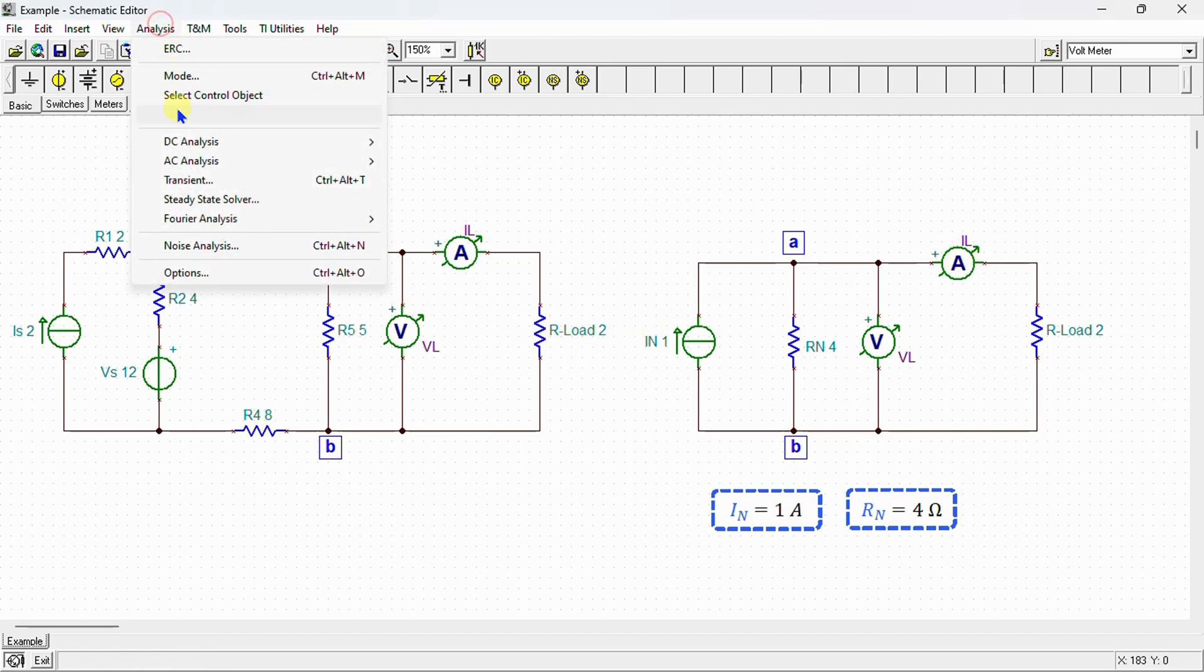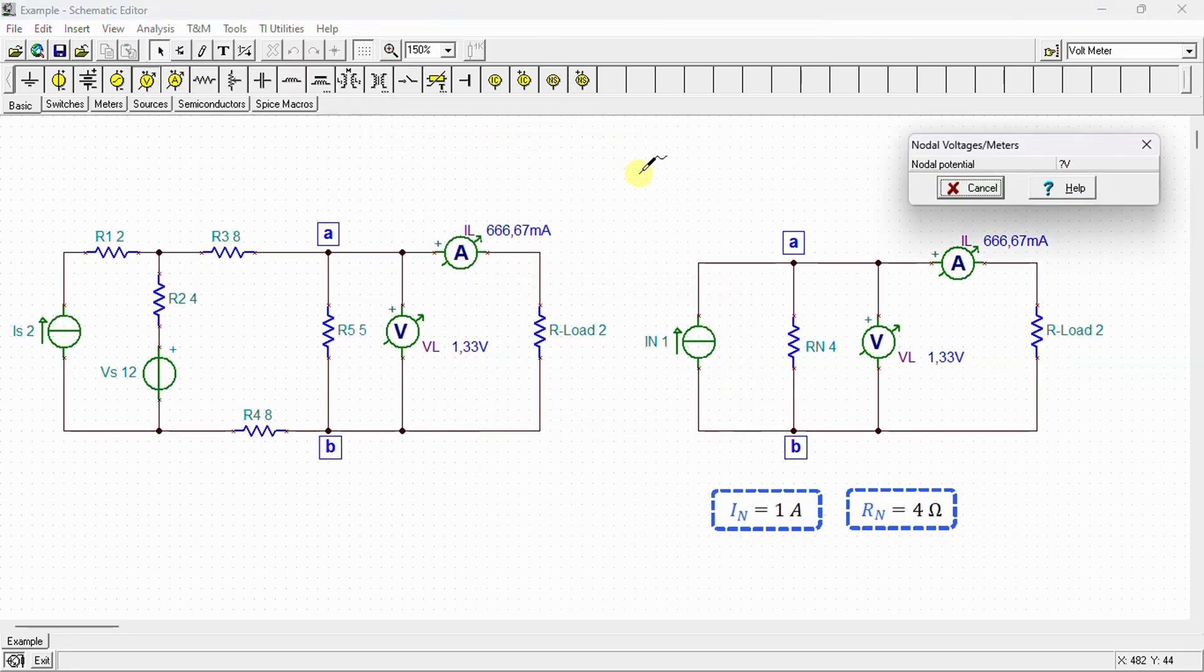Let's move on to analysis. Calculate Norton's voltage. We can see here that the voltage across the load resistor is equal to 1.33 volts. And the current through the load resistor is equal to 666.67 milliamps in the original circuit, and also 666.67 milliamps in the Norton's equivalent circuit.